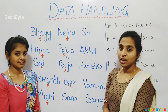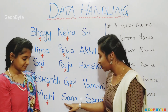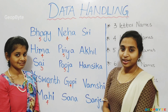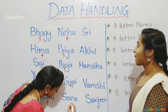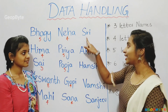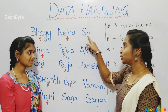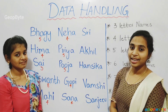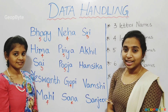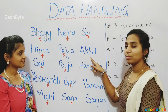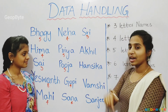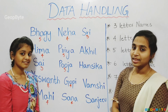Let us count how many letters in the next name. One, two, three, four. There are four letters in that name. Let us count the following name. One, two, three. There are three letters in that name. Let us count how many letters in the name Akhil. One, two, three, four, five. There are five letters in the name Akhil.